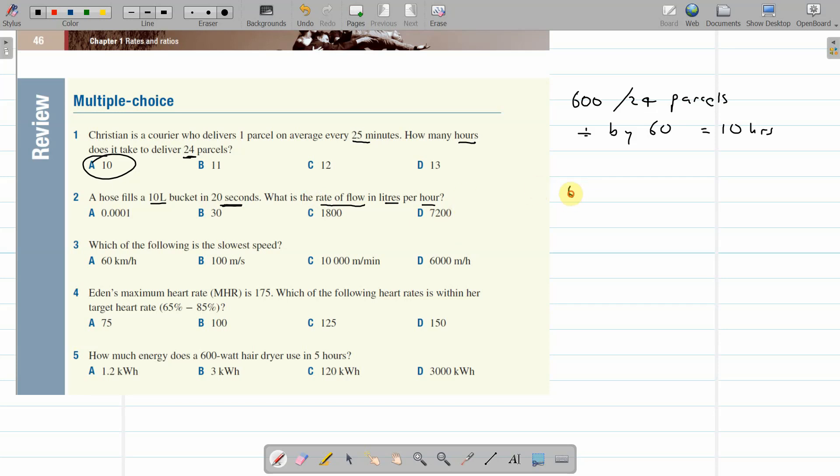An hour is 60 minutes times 60 seconds, which is 3,600 seconds per hour. And so now we've got the seconds part. We're going to work out how many lots of 20 seconds, because there's 10 litres for every 20 seconds. How many lots of 20 seconds go into that? And the way to do it is to divide by 20.